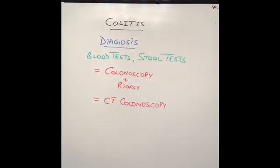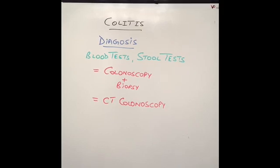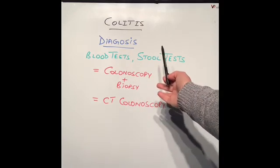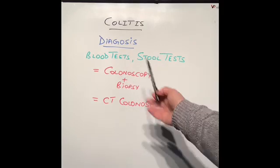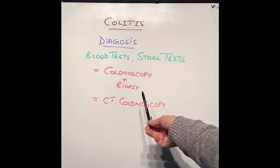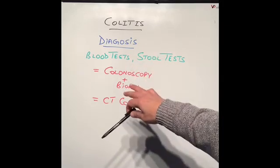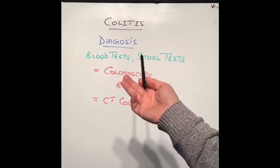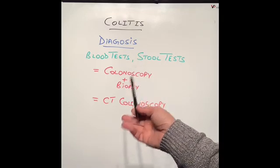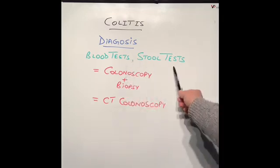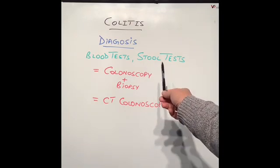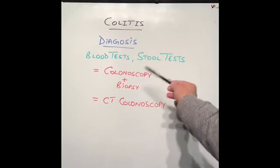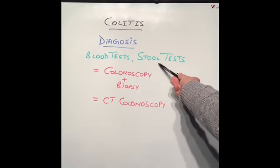For diagnosis, you start from the basics: blood tests and stool tests, since patients are having diarrhea and the doctor needs to rule out bowel infection like gastroenteritis. Blood tests show if the patient is anemic and if inflammation markers like CRP or ESR are raised. Stool tests confirm there is no infection, and a special test called fecal calprotectin — which I mentioned for Crohn's disease — can show there is inflammation in the bowel.